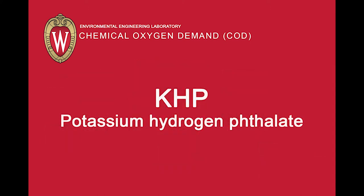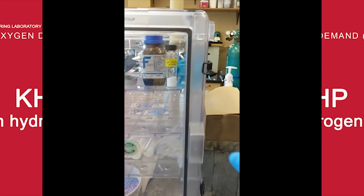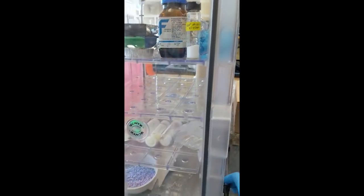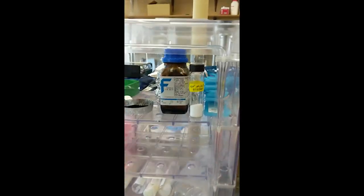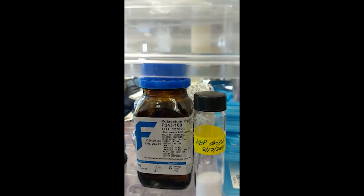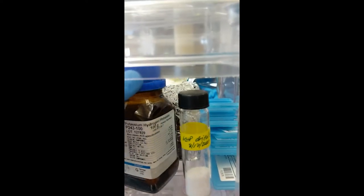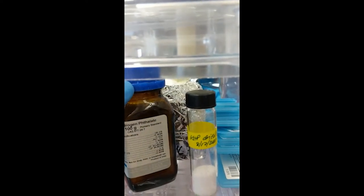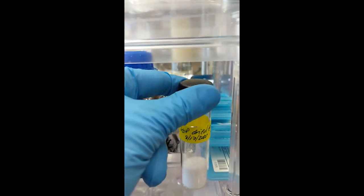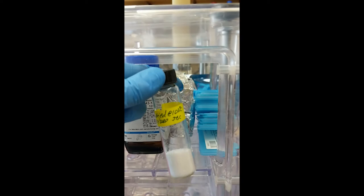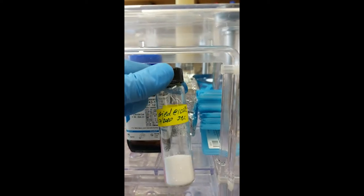KHP, or potassium hydrogen phthalate, is the chemical used to prepare calibration standards for COD analysis. KHP solid, which is a white crystalline material, is transferred into a labeled glass container. The chemical is dried in an oven at 103 degrees Celsius overnight to remove any moisture. After drying, the container is moved to a desiccator to cool and ultimately for storage.